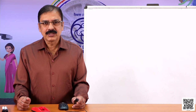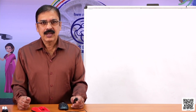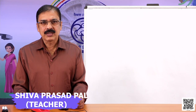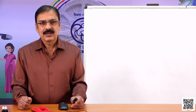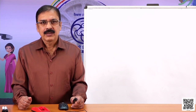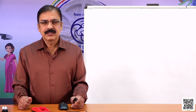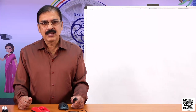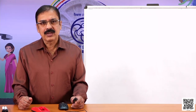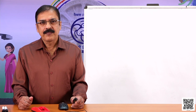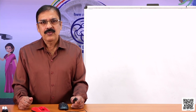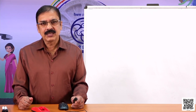Welcome dear students to this session. Today we are going to discuss from class 9 mathematics book, chapter 8, Quadrilaterals, part 4. Previously we have discussed about the properties of parallelogram. So what properties we have discussed, let's see.